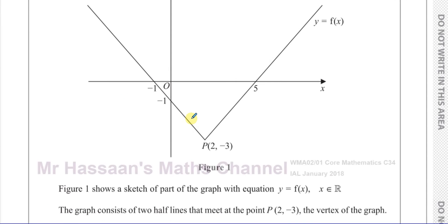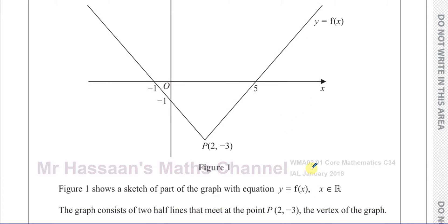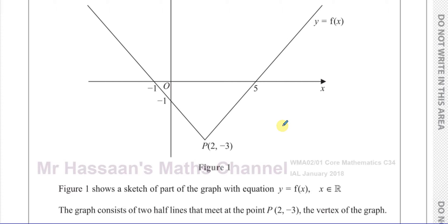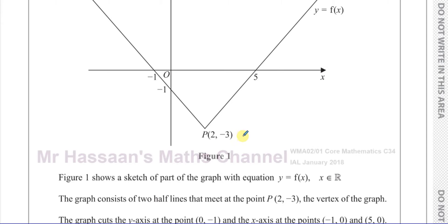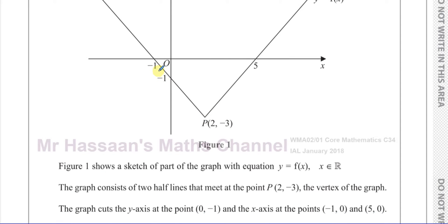Here we've got a modulus function. Figure one shows the sketch of a part of a graph with the equation y equals f of x — they haven't told us what the equation is. However, we can see it's a modulus function from its V-shape. The graph consists of two half lines that meet at the point P at (2, -3), the vertex. The graph cuts the y-axis at (0, -1) and the x-axis at (-1, 0) and (5, 0).